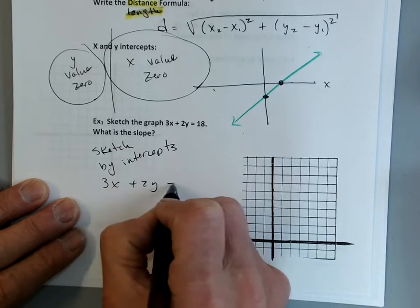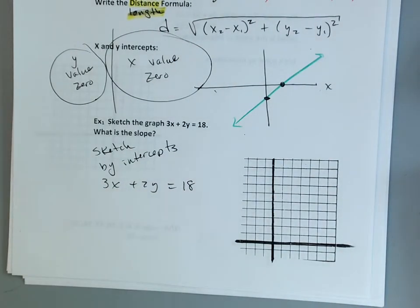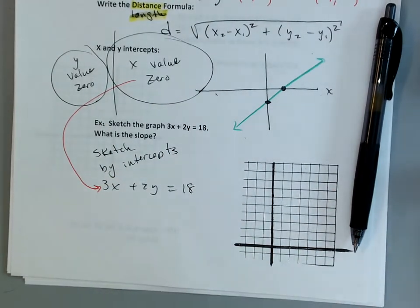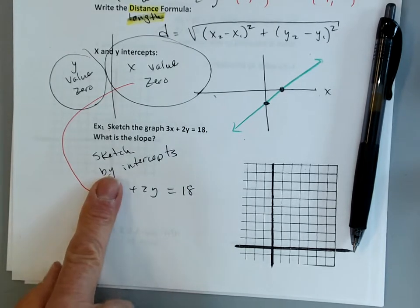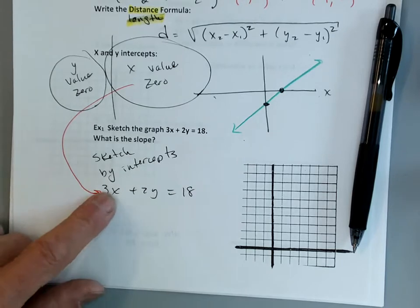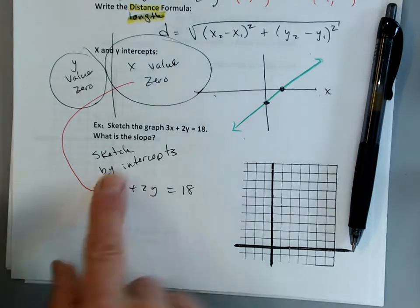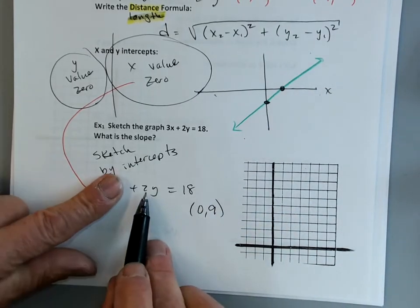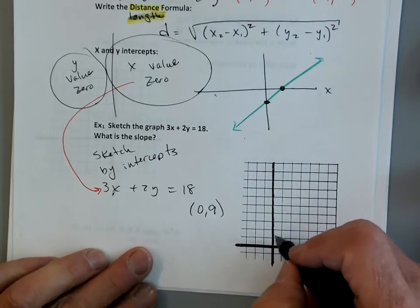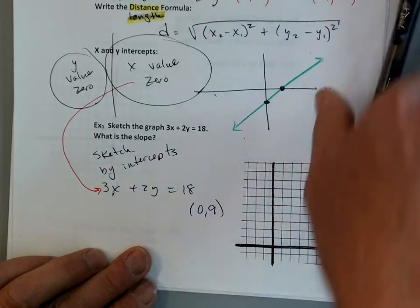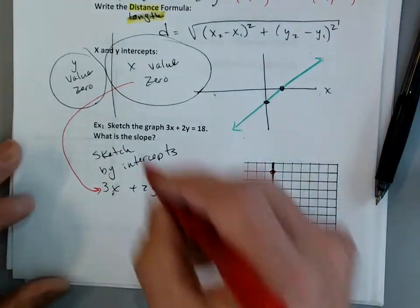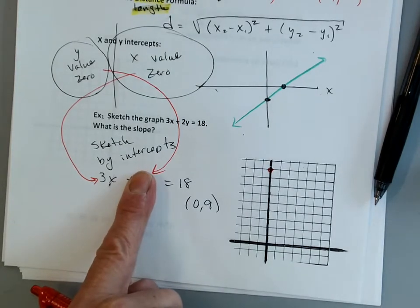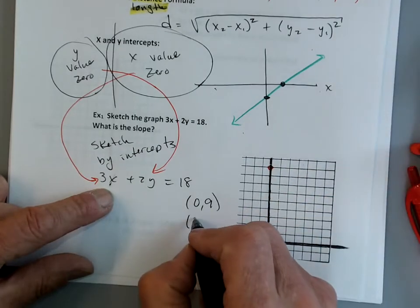If I have 3x plus 2y equals 18, if the x value is 0 — we'd just cover it up, because it becomes 0 — then 2y equals 18, so y equals 9. We'd have a point at (0, 9). If y is 0, we'd cover it up — then 3x equals 18 so x equals 6 — and we'd have a point at (6, 0).